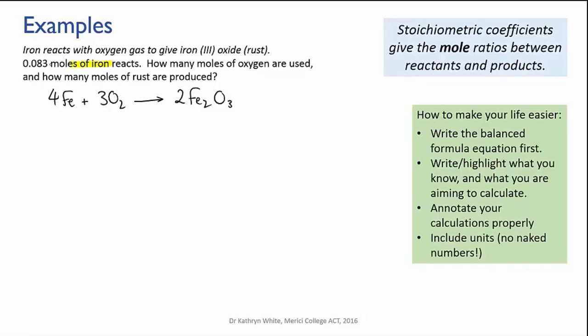And now what do we know? We're told that we have 0.083 moles of iron. And what we're calculating is how many moles of oxygen are needed to react with this amount of iron, and how many moles of iron oxide are produced. So let's write out the mole ratio. We've got four iron to three oxygen to two iron oxide.